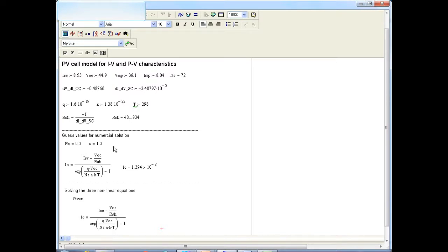That came out to be 402 ohms. We saw that in the PowerPoint slide. Then in order to solve the three simultaneous equations to get RS, A and the IO, we start with some guess values, some initial values for these three parameters.